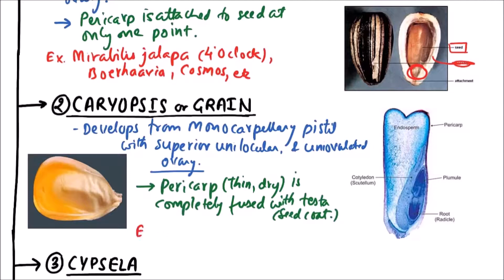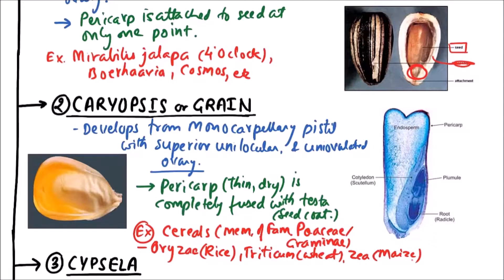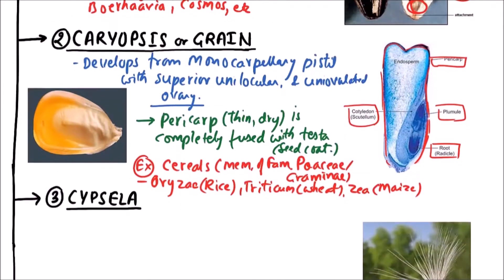Examples of caryopsis include the cereals, which are members of family Poaceae or Graminae, like Oryza (rice), Triticum (wheat), and Zea (maize). Here, the pericarp is completely fused with the seed coat or testa. The inner structure includes the radicle, cotyledon, endosperm, etc. So this is caryopsis or grain.